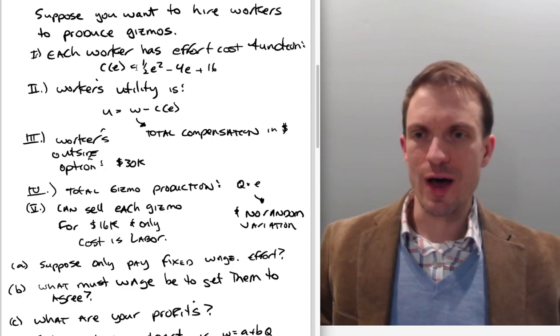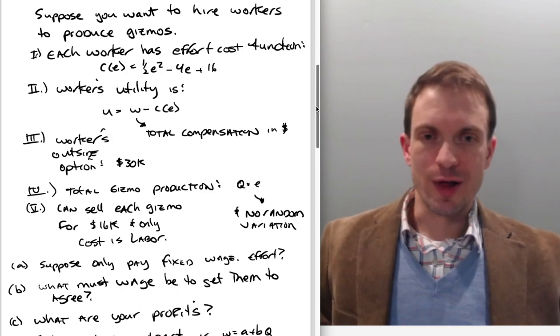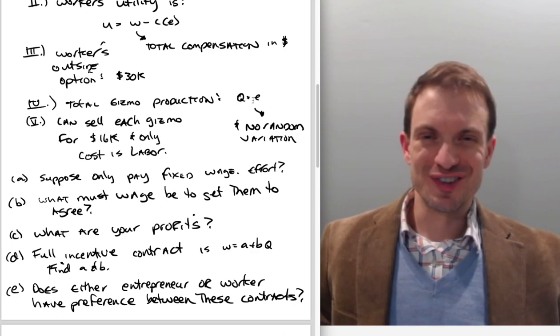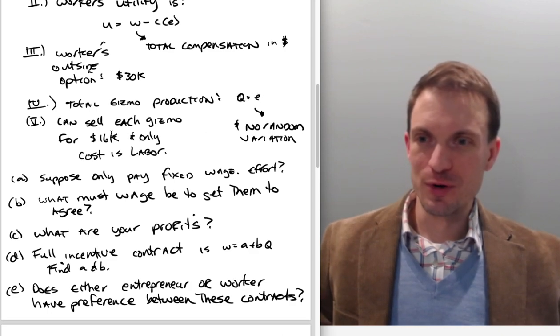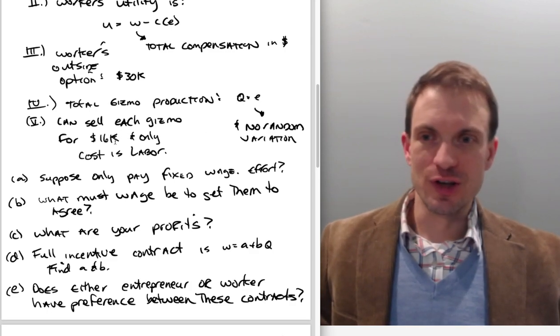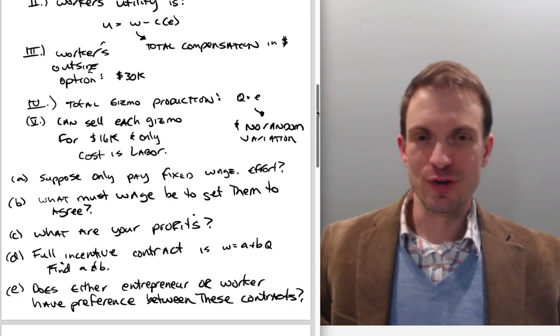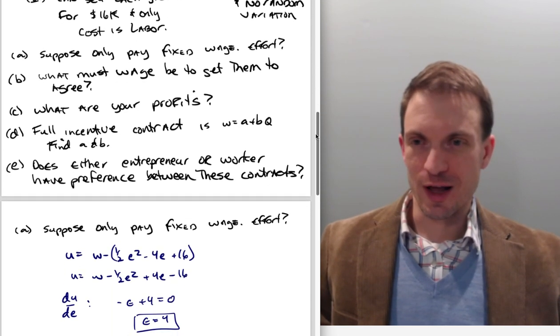So it'll be given by this quadratic (1/2)e² - 4e + 16. We'll assume the worker's utility is just going to be whatever is their compensation, which could include a fixed and a variable component, minus this effort cost. We'll assume the worker will have some outside option, so in this case $30,000. We'll assume total gizmo production is just Q = E, so there's a one-to-one relationship between one unit of effort and one gizmo produced. And we'll assume we can sell each gizmo for $16,000 and our only cost is labor.